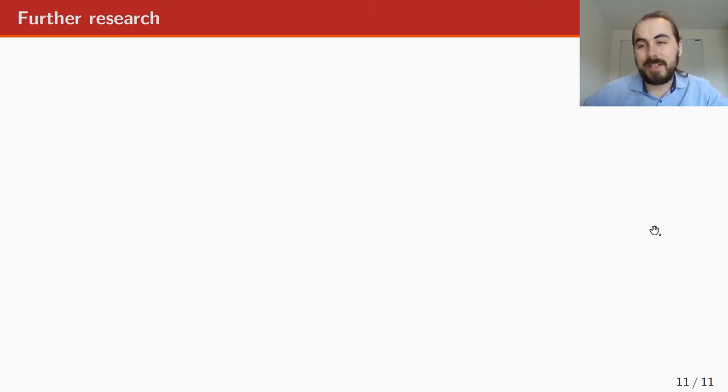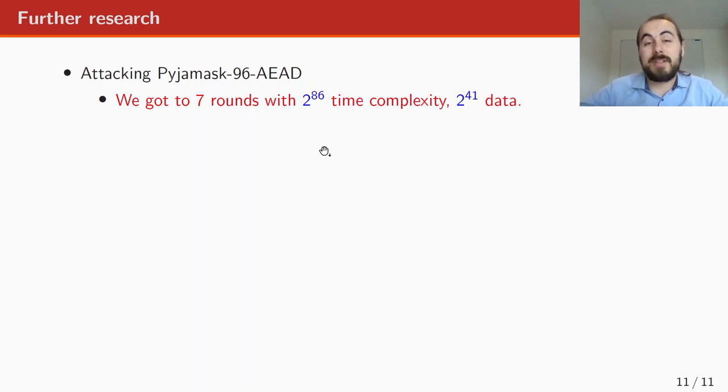And of course, there's always room for some future research. Some easy things to mention. Well, they're not easy to research. But if you can do something, it will improve the attack is to give better bounds on the degrees. I think that's quite hard. But if you reduce the upper bounds on the degrees, you immediately have an improved attack. But more importantly, you can try to attack the AEAD scheme, PYJAMASK-96. We also tried that. And we got to seven rounds with a huge time complexity and quite a big data complexity. But maybe someone else can do better. Or you can even, if you're feeling very lucky, try attacking the PYJAMASK-128-AEAD scheme. To which this attack did not help us at all. So we don't have any results.